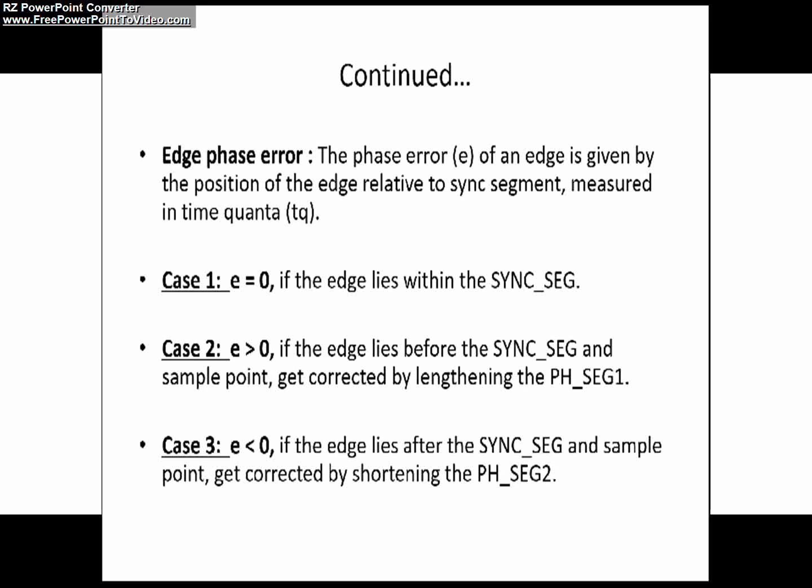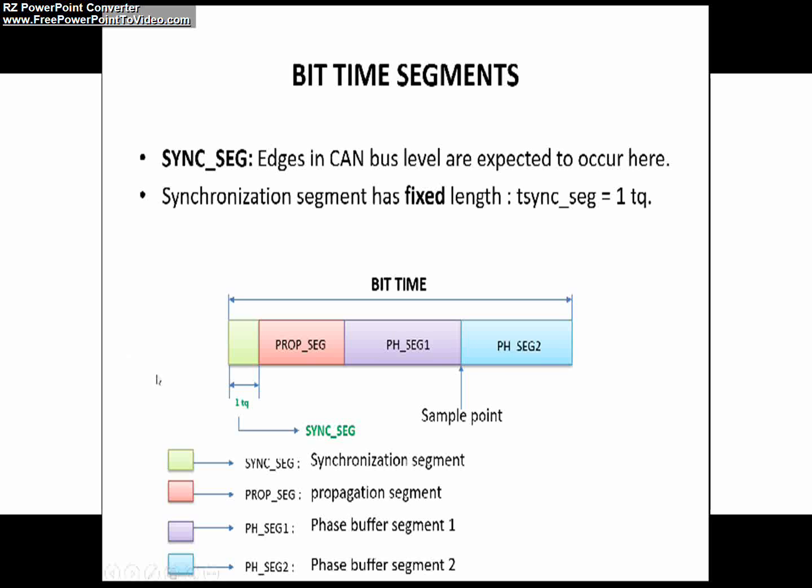Then there will not be any edge phase error. That means E is equal to 0. Consider the second case: if the edge lies before the sync segment, as I already said before the sync segment, then the edge phase error will be greater than 0.